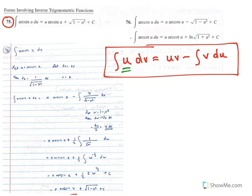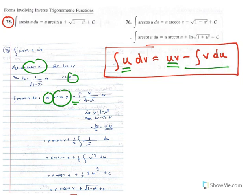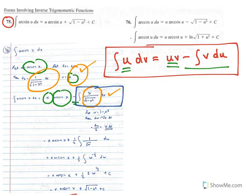Now you would apply the integration by parts formula. The indefinite integral of u dv equals u times v minus the indefinite integral of v du. v is x and du is 1 over the square root of 1 minus x squared dx, so v du would be x times 1 over the square root of 1 minus x squared dx. Then you can integrate this indefinite integral using a u substitution.